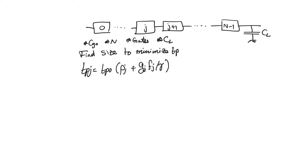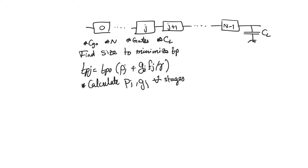We have already found an expression for tpj: tpj equals tp0 times (pj plus gj times fj over gamma), where pj is the parasitic effort of stage j and gj is the logical effort of stage j. We can calculate pj and gj for all stages a priori, because these are properties of the gates themselves — not of their sizes. So we can calculate p and g for all stages in advance.